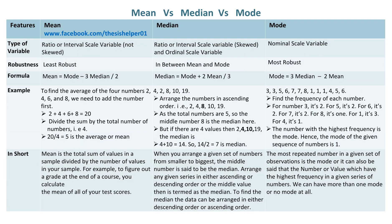Type of variable used in mean are ratio or interval scale variable, not skewed. Type of variable used in median are ratio or interval scale variable, skewed. Type of variable used in mode is ordinal scale variable.